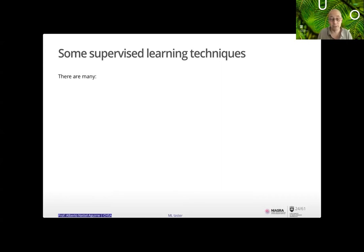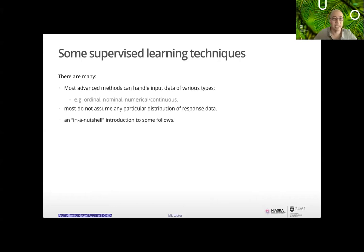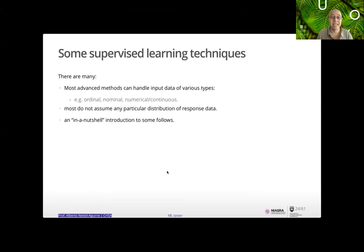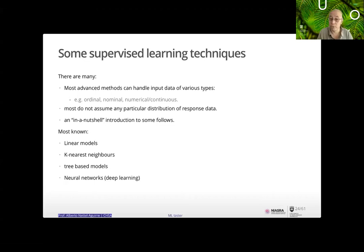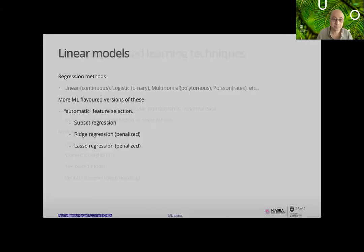Now I'll go into some supervised learning techniques — there are many. Most advanced methods can handle inputs of various types: ordinal, nominal, numerical, continuous. Most do not assume any particular distribution of response data — though parametric regression models we all know and love do. In a nutshell, some of the most known are linear models, k-nearest neighbors, tree-based models, and neural networks, which are also now known as deep learning.